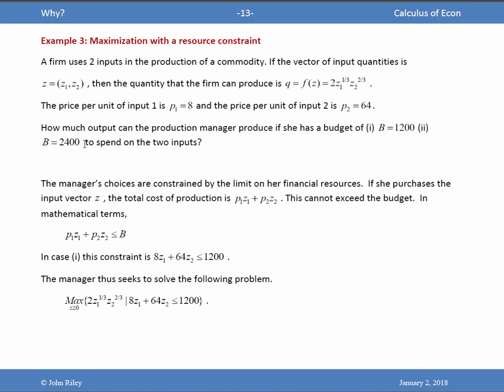Well, the manager's choices are constrained by the limit on her financial resources. If she purchases the input vector Z, the total cost of production or expenditure is P1Z1 plus P2Z2. This cannot exceed the budget. In mathematical terms, the expenditure is less than the budget. So in case 1, 8Z1 plus 64Z2 is less than $1,200. The manager thus seeks to solve the following problem. So maximize output subject to the constraint, subject to this constraint. Actually, there's a second constraint here. It's not just that the budget constraint must be satisfied. The only numbers that make sense in an economic problem are typically non-negative numbers. So there really is a second non-negativity constraint to worry about.